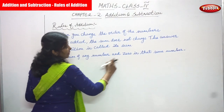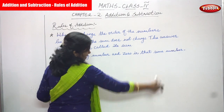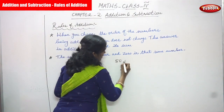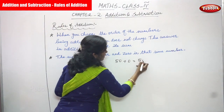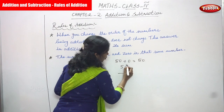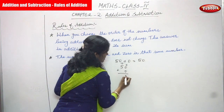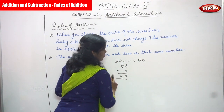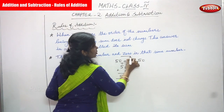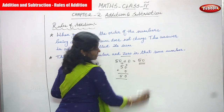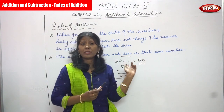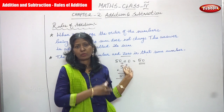The sum of any number and 0 is the same number. For example, 50 added with 0 gives you 50. This is the meaning of addition and also the rules of addition.